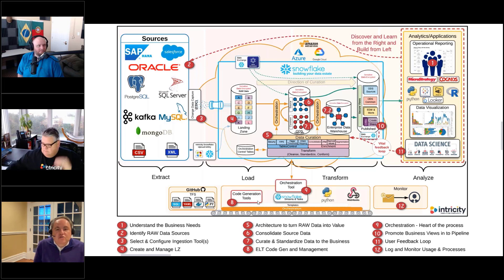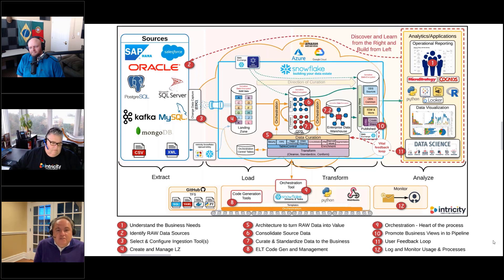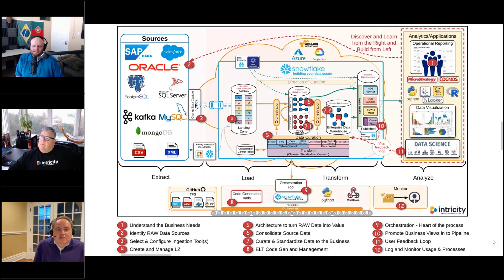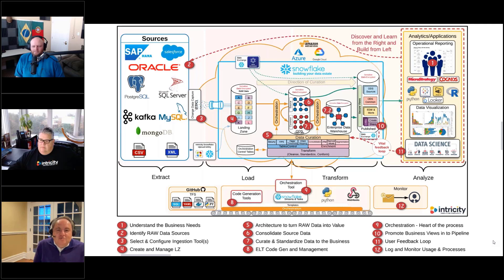Ultimately, code generation is about protecting you from having to do migrations. It's about how do I build today — how do I capture the logic and the metadata, but not necessarily the implementation? So if you wrote the code for COBOL yesterday, but now you want to run that code on AWS, you won't have to rewrite that code because the logic is the same. It's the implementation that's going to change.